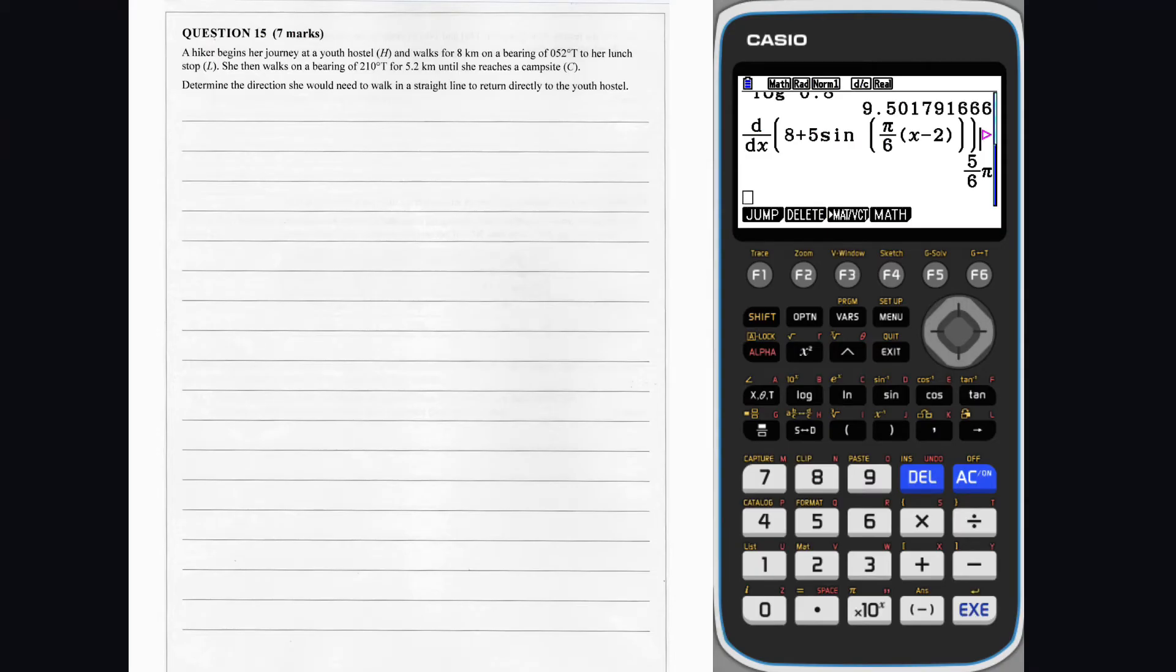Question 15. The following picture can be drawn to demonstrate the hiker's journey. We want to find the direction beta that the hiker must walk to get back to the hostel. Using co-interior angles,